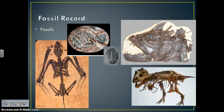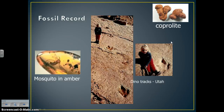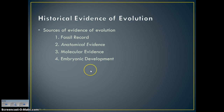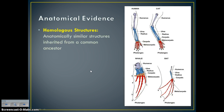Fossils are simply imprints or remains left behind by organisms. The last piece of evidence for evolution we'll discuss is anatomical evidence — looking at the anatomy or body of organisms. Three things to know: homologous structures are anatomically similar structures inherited from a common ancestor, even though they might perform different functions. For example, the human arm and a bat wing perform very different functions, but their bone structure is actually very similar — those are homologous structures.